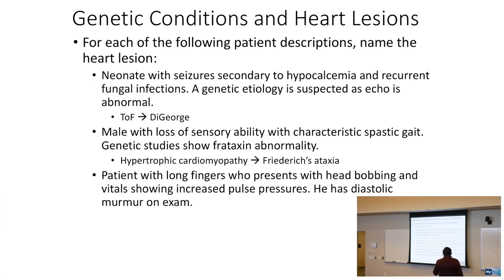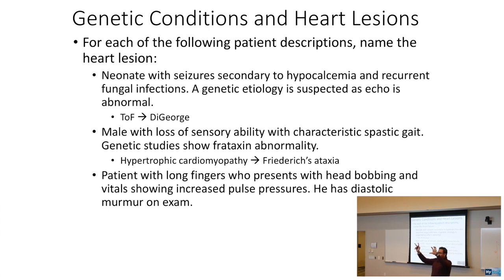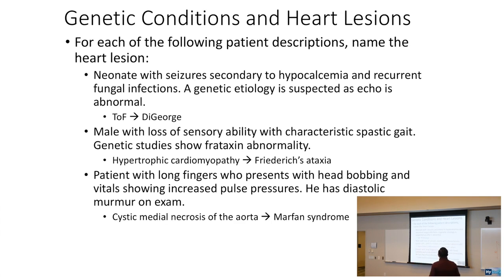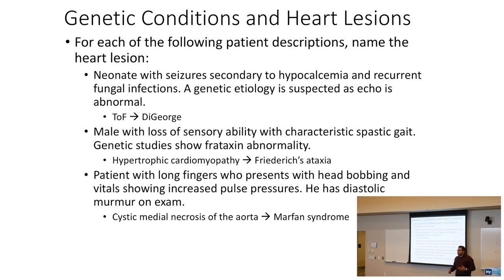A patient with long fingers who presents with head bobbing, with vitals showing increased pulse pressures and a diastolic murmur on exam. Long fingers — we're talking about the Marfan's patient. Marfan's patients can get not only aortic aneurysms but also cystic medial necrosis of the aorta, which is going to cause aortic regurgitation.